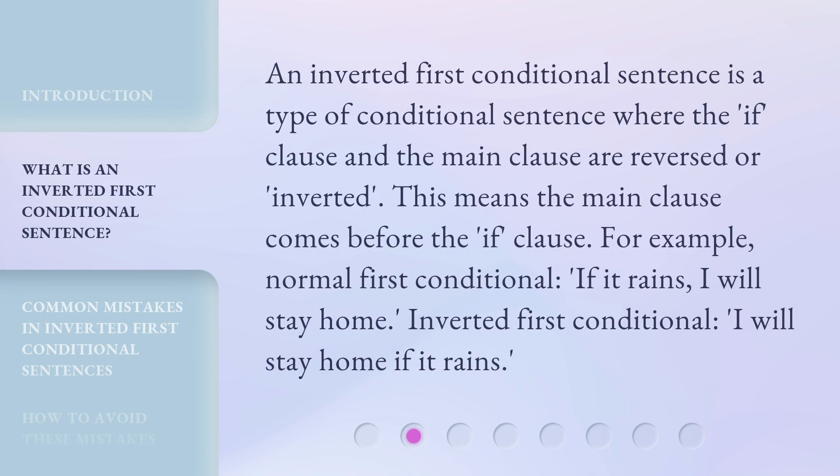An inverted first conditional sentence is a type of conditional sentence where the if clause and the main clause are reversed or inverted. This means the main clause comes before the if clause. For example, normal first conditional: 'If it rains, I will stay home.' Inverted first conditional: 'I will stay home if it rains.'